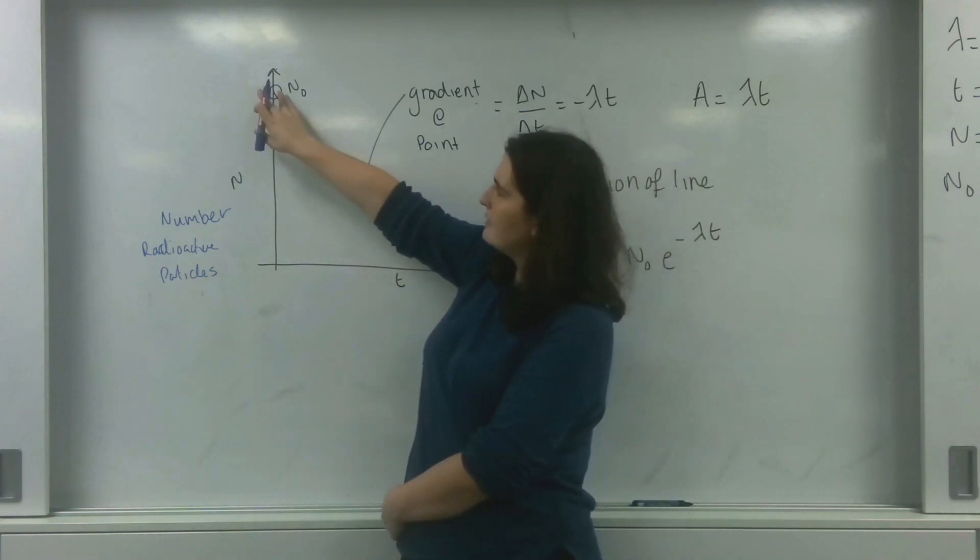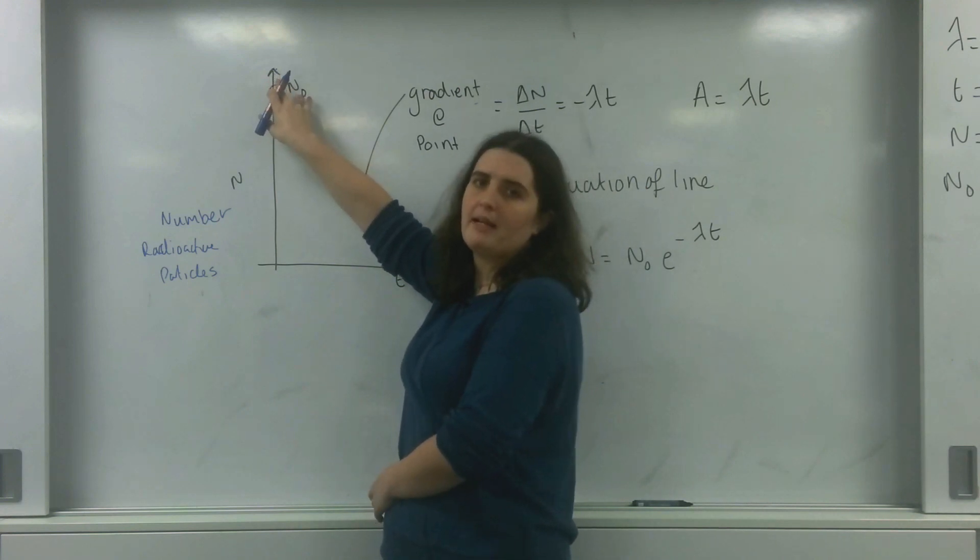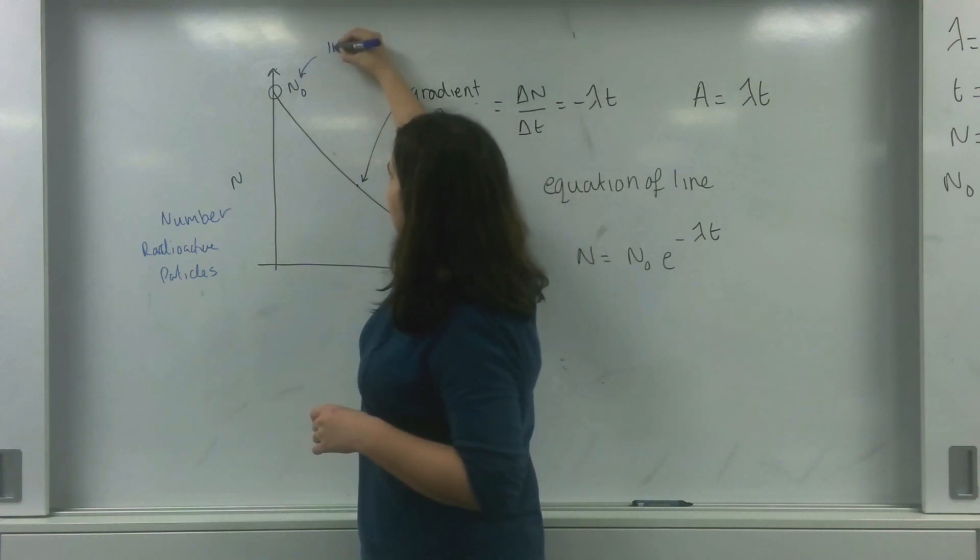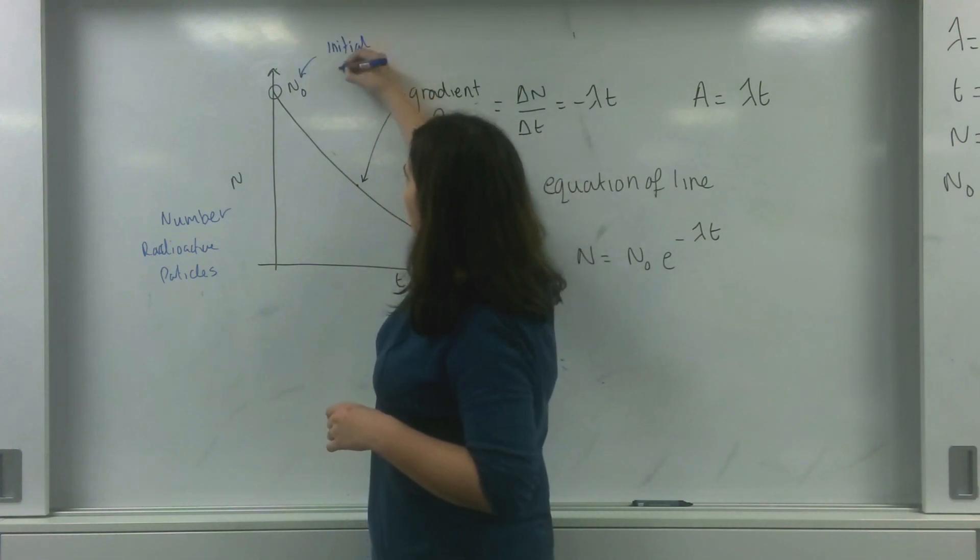And this value up here, what I've put as n₀, this is the maximum amount of radioactive particles I have or the initial amount. So this here is the initial amount.